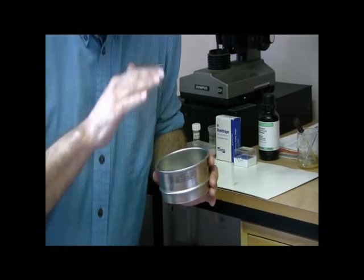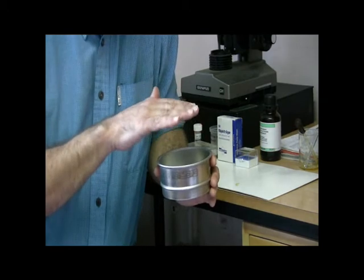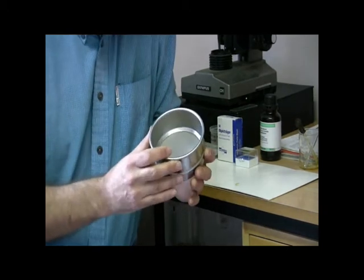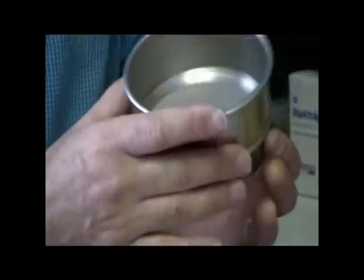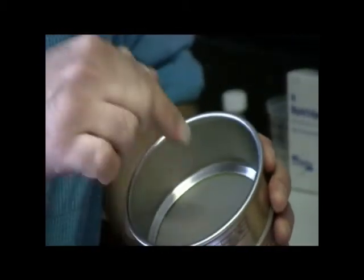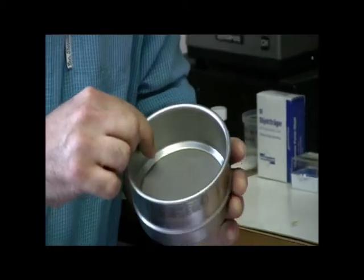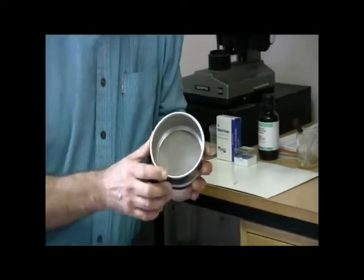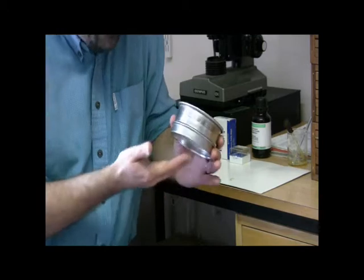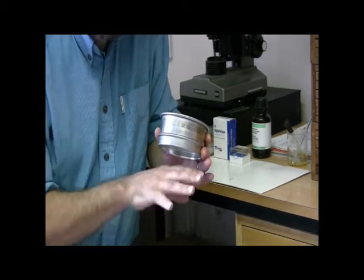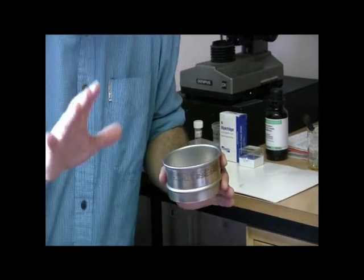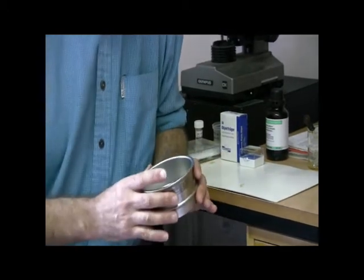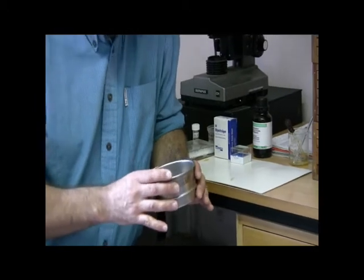Everything finer than 150 microns would go through the top sieve, and everything greater than 63 microns would be caught in this lower sieve. It's the material that's caught in this sieve that will contain the radiolaria that we want to look at. Everything that goes through, we're not really interested in that. Everything caught on the 150 micron sieve, we're not really interested in either because that's probably too big for the radiolaria we want to look at.